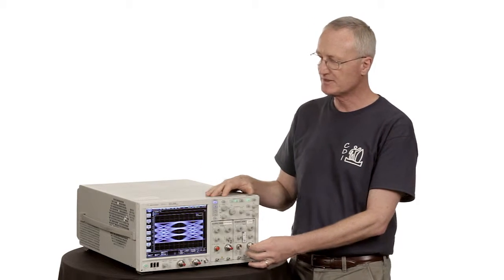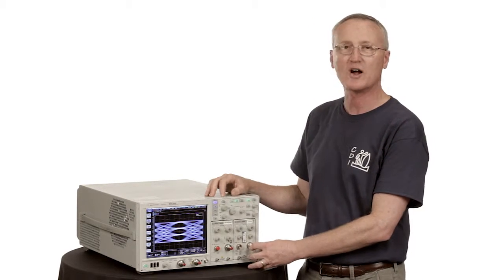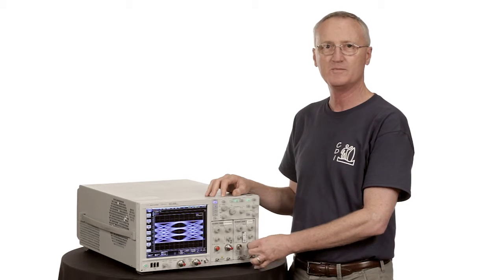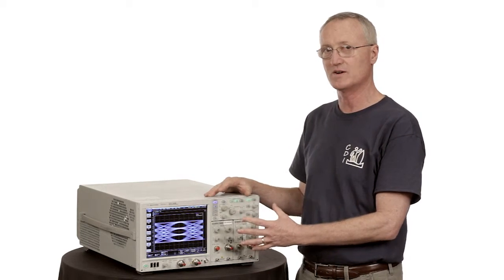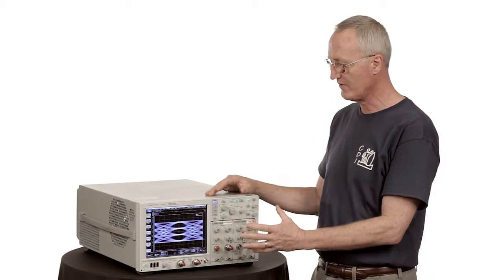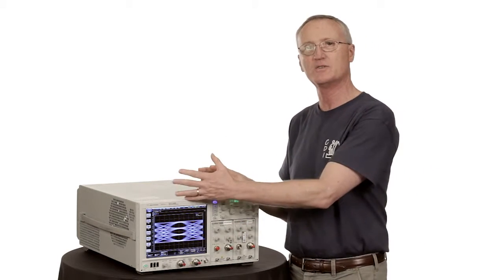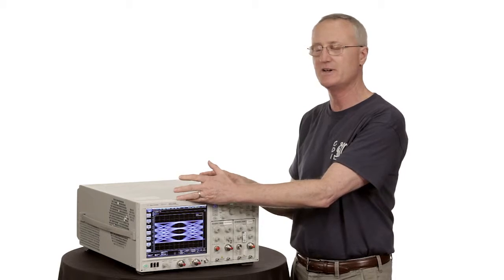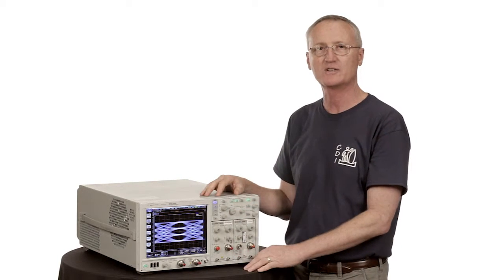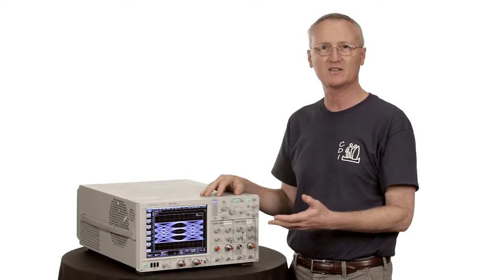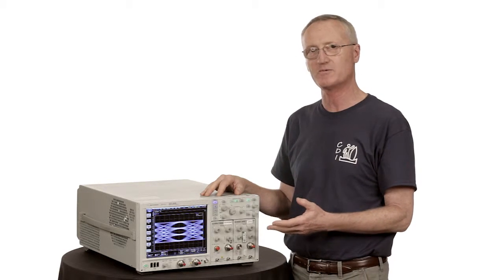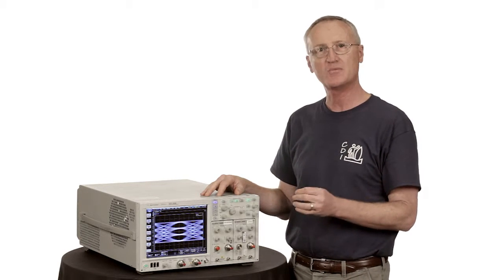There are certain measurement scenarios where clock recovery is required, and in a sampling scope that is done in hardware, not software. So we've got different scenarios. We have external accessories that do clock recovery. We have modules that have clock recovery built in. What would we have to do to change that clock recovery hardware to work with a PAM-4 signal? It turns out not much.